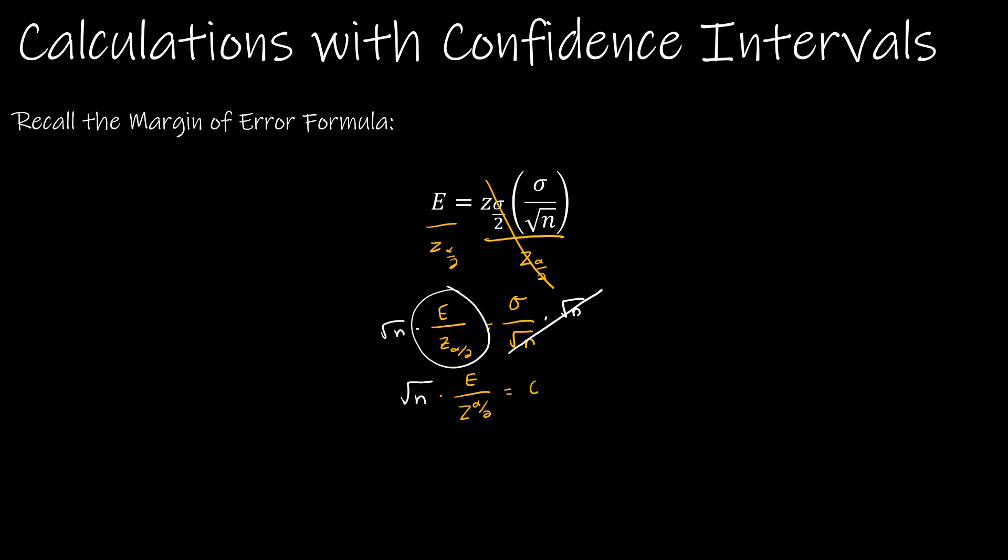So now what I'm going to do is multiply each side times z of alpha over 2 divided by E. And what happens is that E cancels, the z of alpha over 2 cancels and I get the square root of n. And on the right side, my numerator includes both sigma and z of alpha over 2, and my denominator includes E.